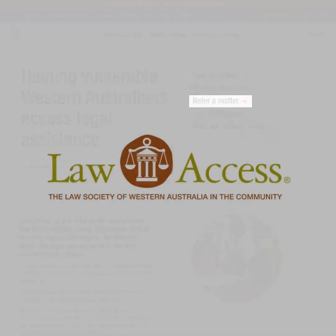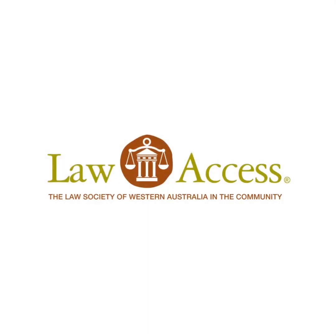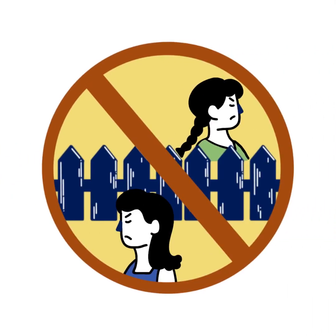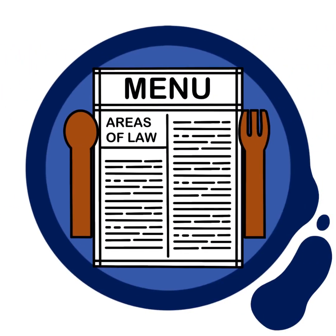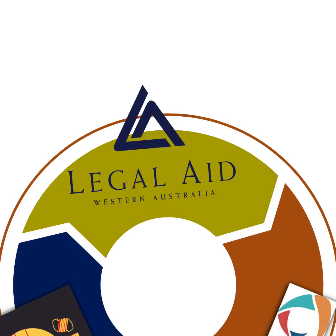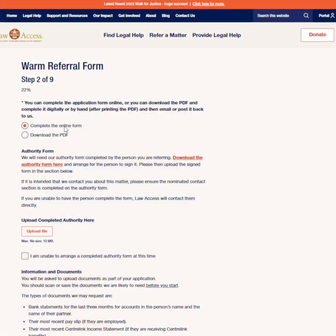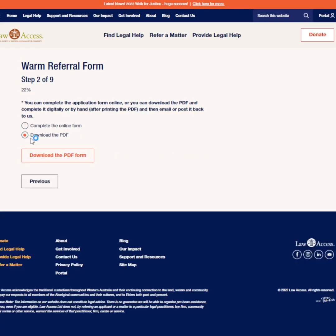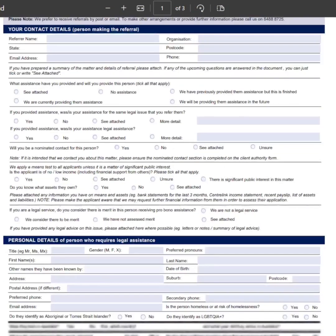Law Access organises assistance for many legal issues, but there are some legal issues where we will not be able to assist. Our website has a guide to help you work out if we will be able to assist. Please check before you apply or refer. If we can't assist, our website contains other options for legal assistance. If we may be able to assist, you can use our online forms or download a PDF and then email or post it to Law Access.